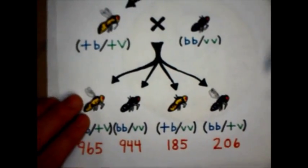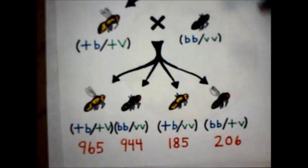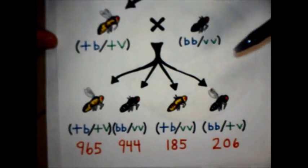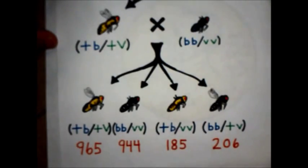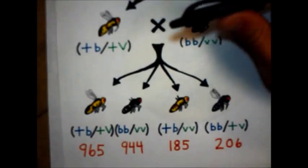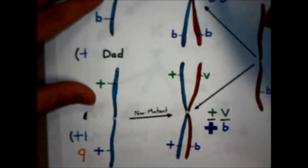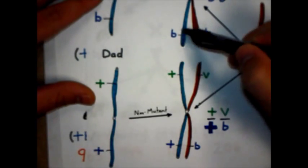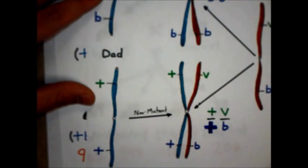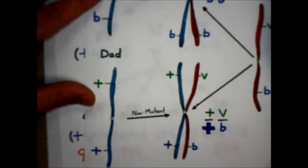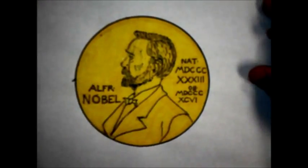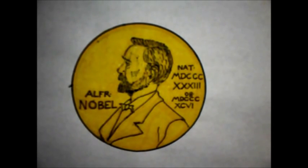But eventually, with the help of Alfred Sturtevant, who we're going to learn about next, Thomas Morgan figured it out. He realized that these genes are on separate chromosomes and they are located here. But that these genes were somehow capable of switching somewhere during meiosis. And for that, he ended up winning the Nobel Prize in Medicine in 1933.